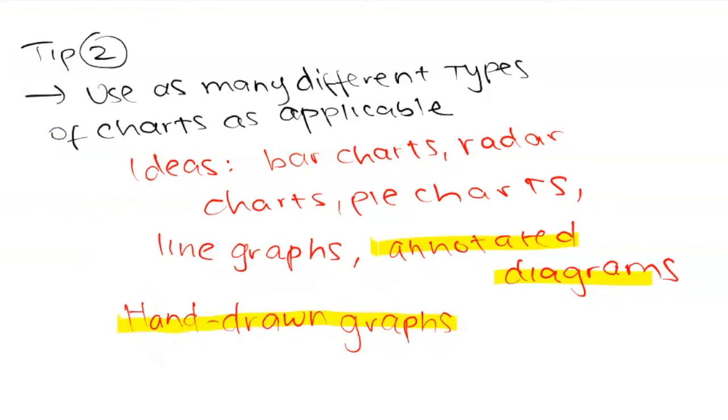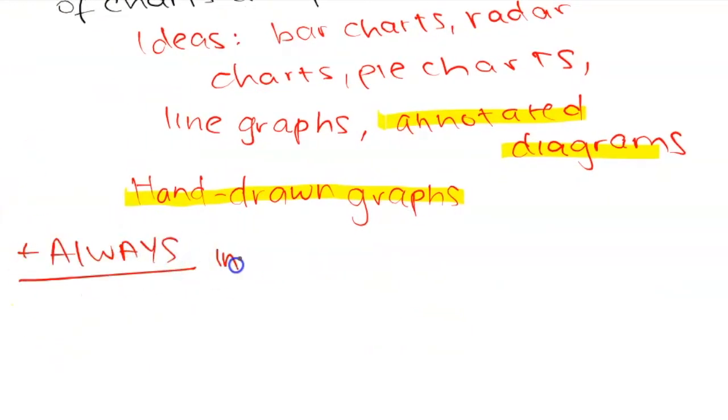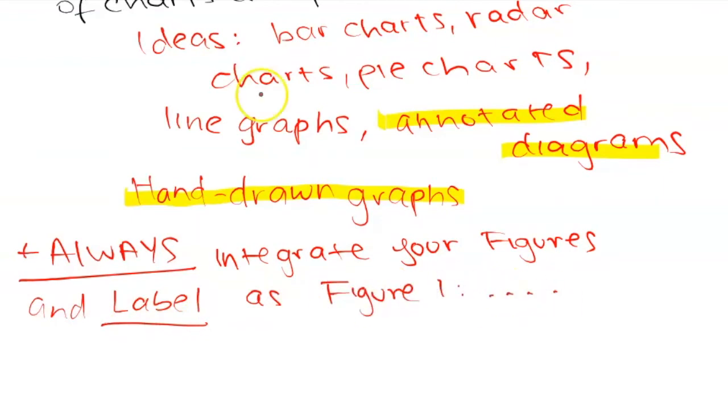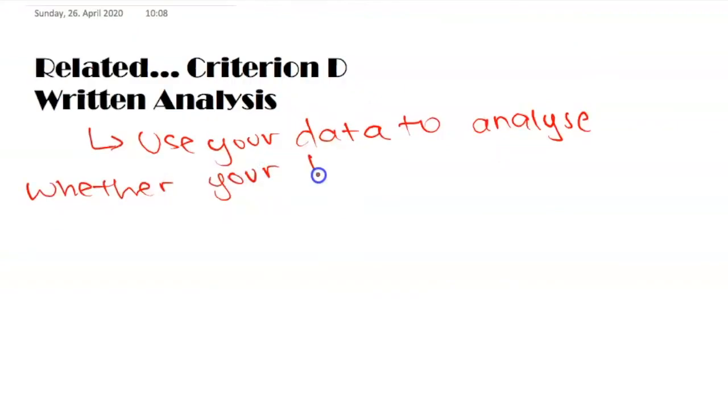My next tip is also to use at least once a hand-drawn graph. Again, this could be good for personal engagement, but just make sure that it is clear. Another thing to keep in mind is that you can't just put in charts randomly into your IA. You have to integrate them, by which I mean that you have to clearly address them with words before putting them in or after putting them in. You also want to label them properly. So figure one, figure two, figure three. So if you have a line graph, for instance, it should be line of best fit demonstrating the correlation between the independent and the dependent variable.